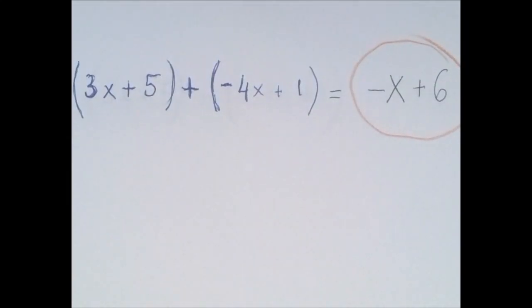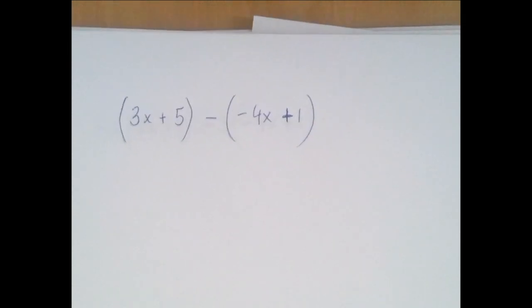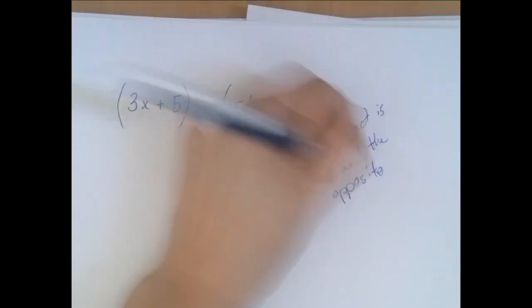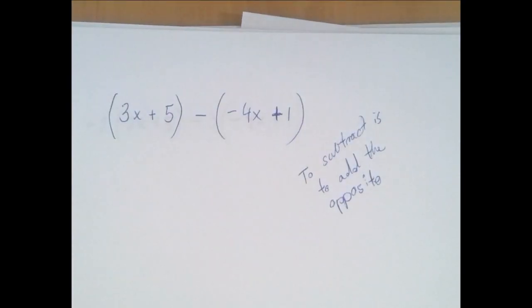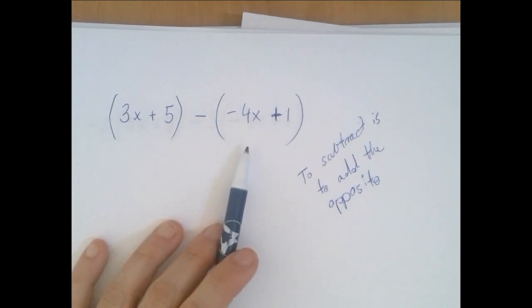Okay, let's see the next one. So now we have the same two algebraic expressions, but this time we are subtracting. As always, to subtract is to add the opposite. So we're going to add 3x plus 5 and the opposite of minus 4x plus 1.